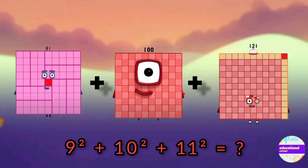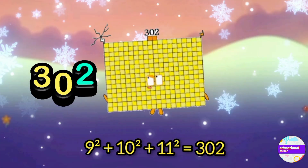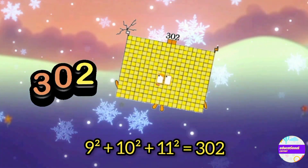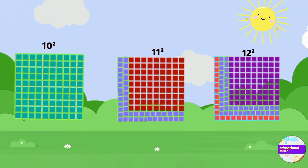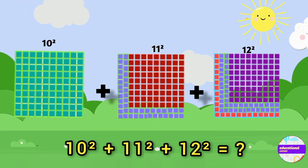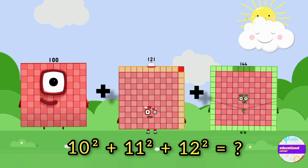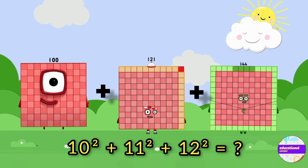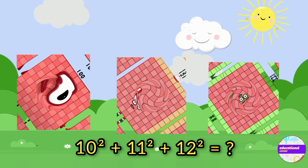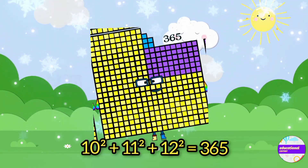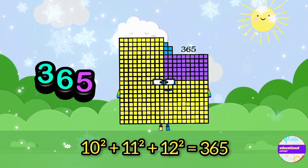The next sequence is nine, ten, eleven squares: eighty-one, one hundred, and one hundred twenty-one — add together it is three hundred two. The next is ten, eleven, and twelve: one hundred, one hundred twenty-one, and one hundred forty-four — add together and the answer is three hundred sixty-five.